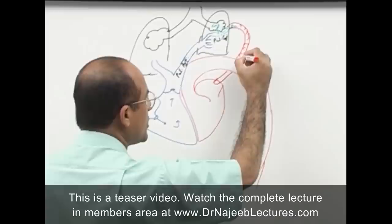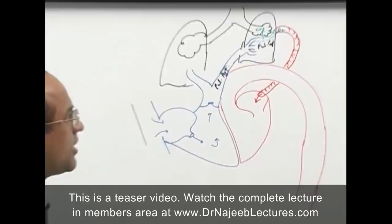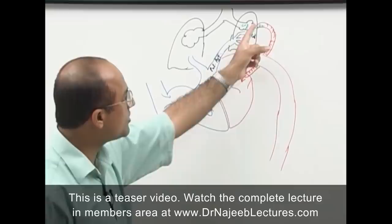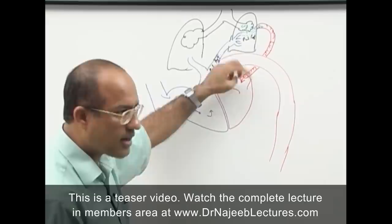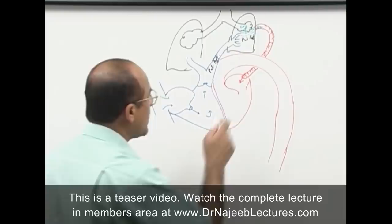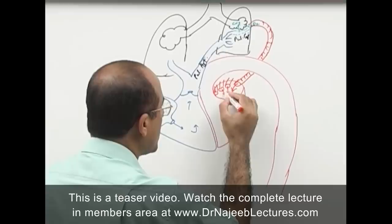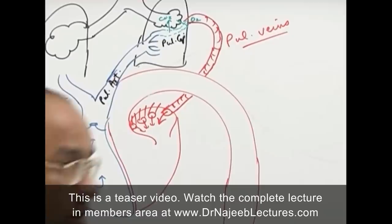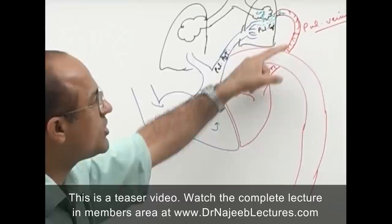This oxygenated blood drains into the left atrium. The vessels bringing blood from the lungs to the left atrium are called pulmonary veins — two from each lung, so four in total. An important point to remember: pulmonary veins carry oxygenated blood. So the left atrium receives oxygenated blood from the lungs through the pulmonary veins.